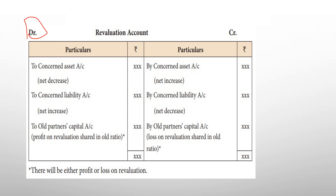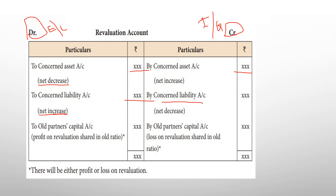Is tarah se Revaluation Account — just like profit and loss account — ki do sides hain: debit side (left hand side) aur credit side (right hand side). Debit side — all expenses and losses — yahan par expense aur loss ayega. Credit side — income and gains — yahan par jitne bhi faide ho rahe hain, income ho rahi hai, partnership firm ko jitne bhi gains ho rahe hain. Net increase in asset — credit; net increase in liability — debit; net decrease in liability — credit.